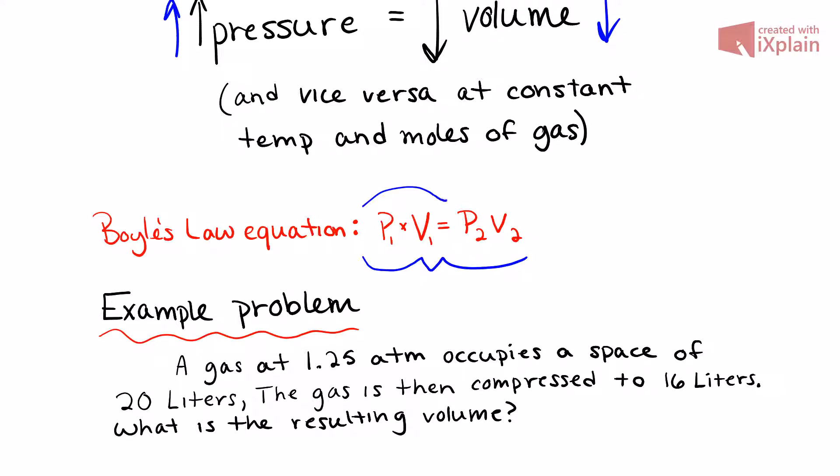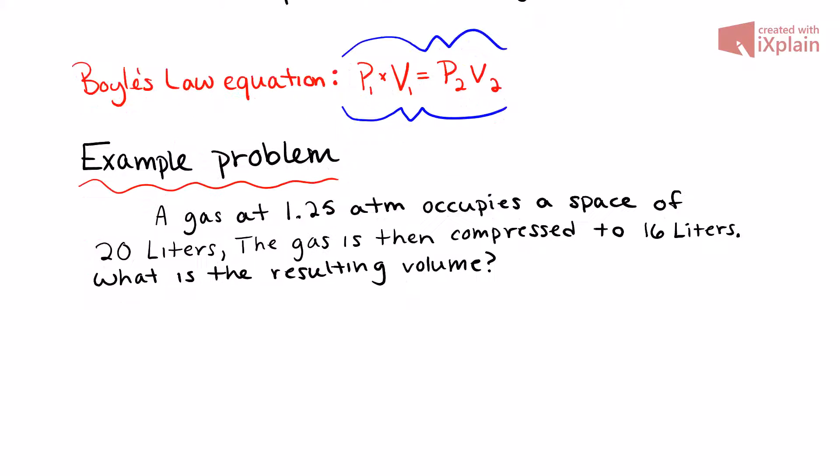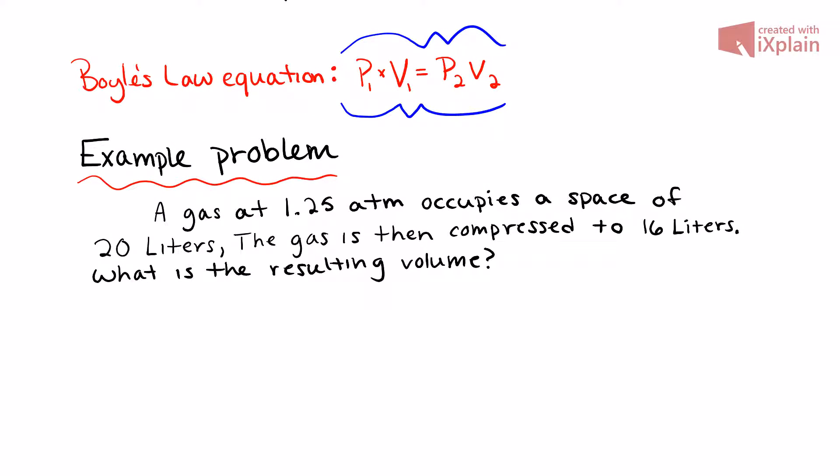We have an example problem down here. The best thing to do for these equations is just to label everything you're starting with. So what I like to do is I put P1 and V1, and then over here I'll draw P2 and V2. From here I'll just read through the problem and mark everything as I go.